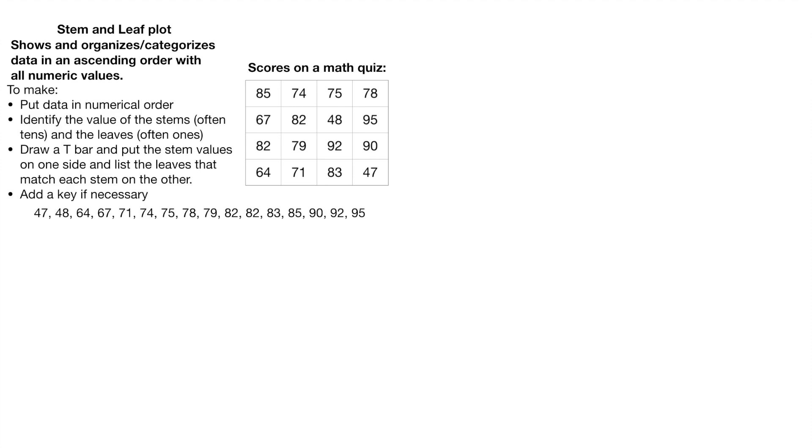we're going to put the data in numerical order. This is not required, but I think it's really helpful and just kind of makes it easier to see. Then you're going to identify the values of the stems and the leaves. Now you can see I wrote up here often tens and often ones. So if you were thinking counting by tens,